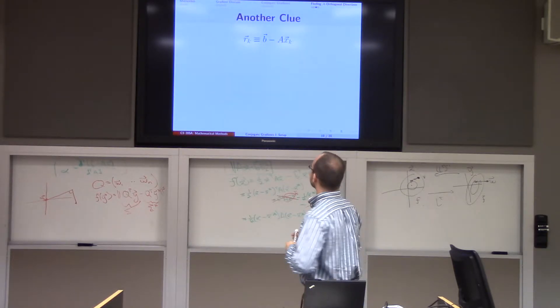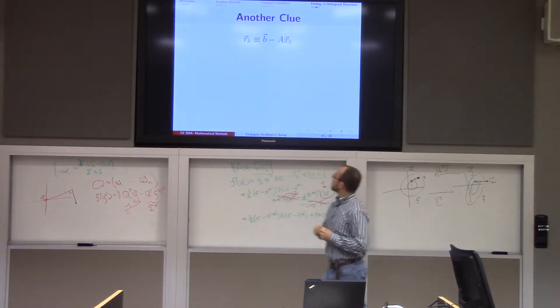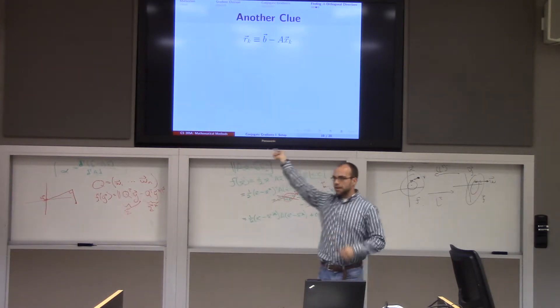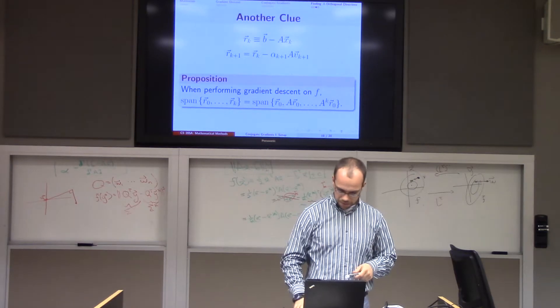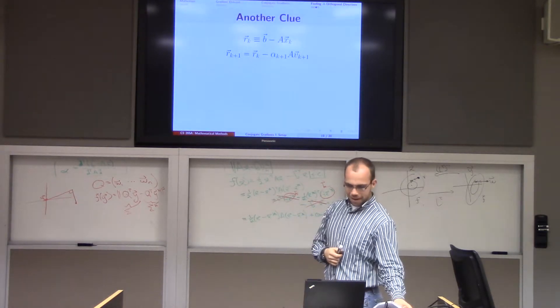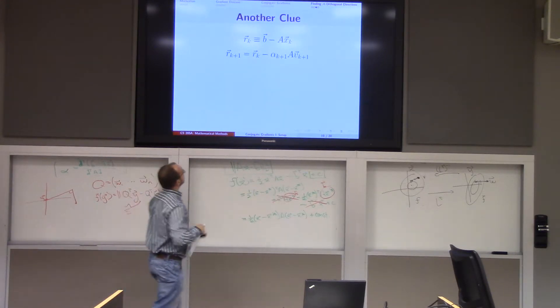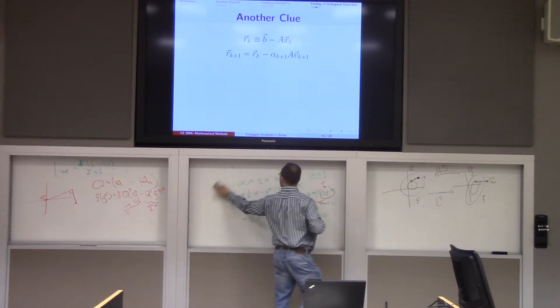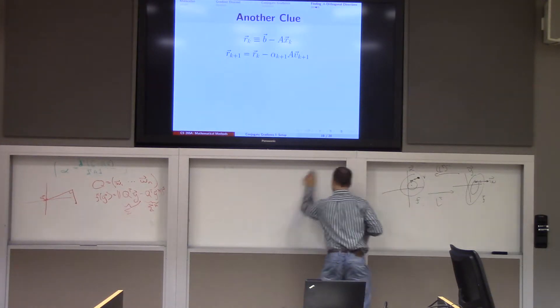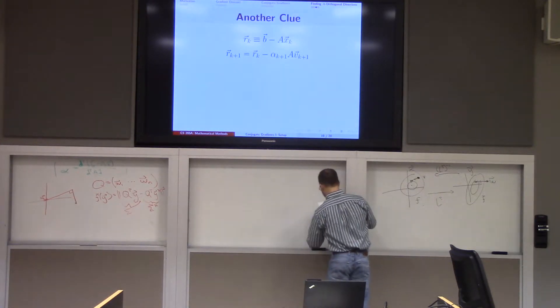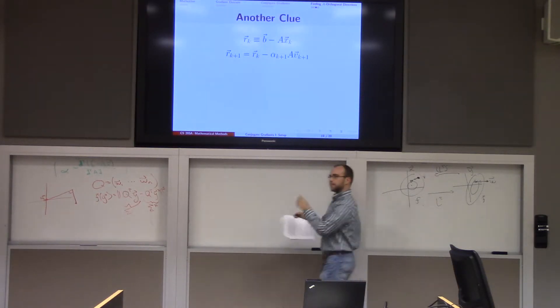So we can get one more clue, and then we're going to stop for the day. So let's define the residual. Remember, it's going to be b minus ax, but now we're going to have search directions that aren't the residuals, so we're going to call the residual r instead of d. We can prove a formula which actually gives us an iterative update for the residual for any line search along a direction v. I'm going to go two and a half minutes over, and then we'll stop, I apologize.